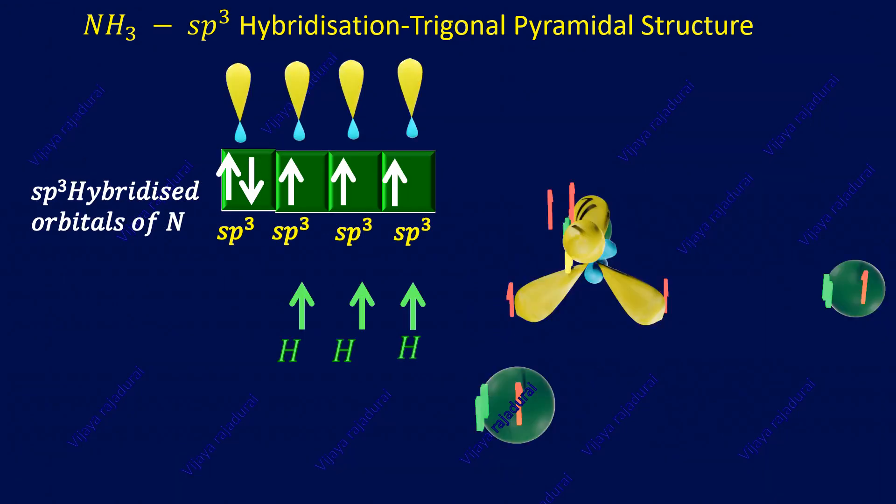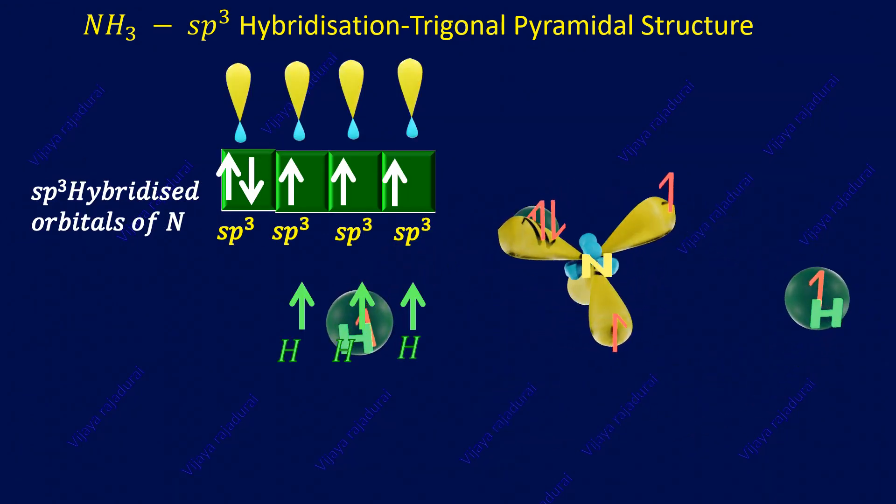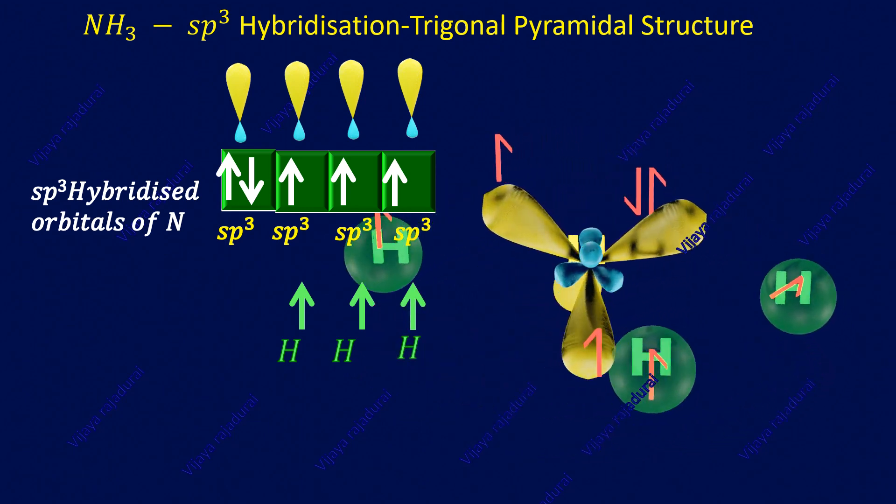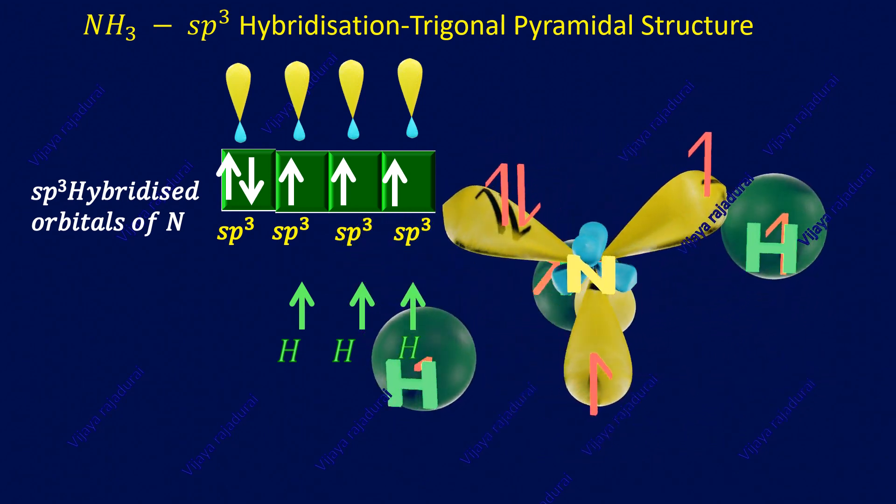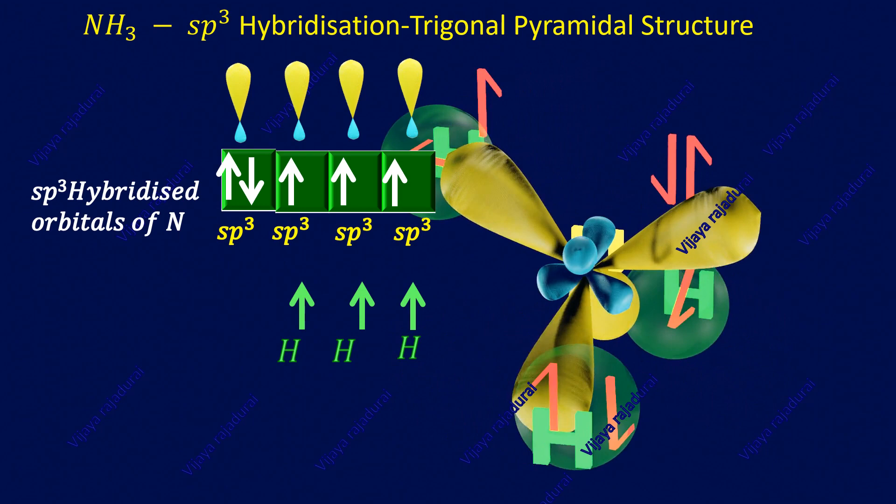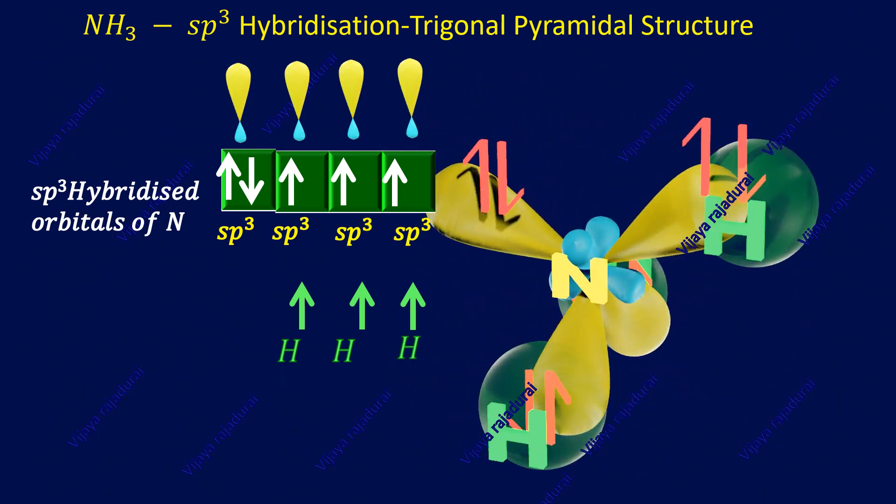Three out of 4 sp³ orbitals are overlapped with 3 hydrogen atoms of 1s orbital forming 3 NH bonds and 1 lone pair of electron is present in ammonia molecule.